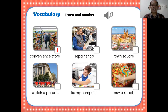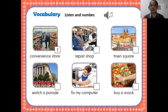Jadi antara kalimat yang satu dengan yang lainnya ada sangkut pautnya atau ada hubungannya. There is a relationship among the pictures — antara gambar satu dengan gambar yang lain saling berhubungan. Sebelum kita lebih jauh ke sana, kita mau mendengarkan dulu, saya putarkan audionya.